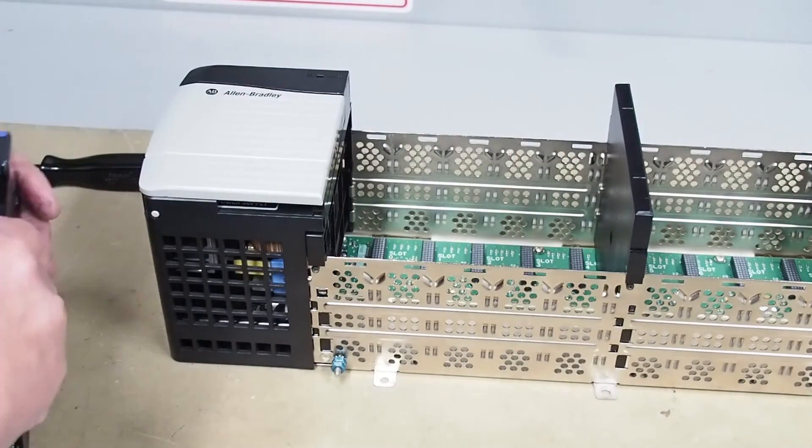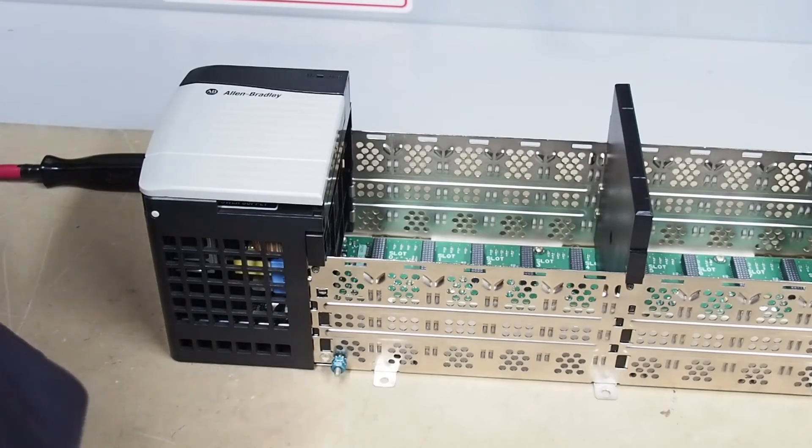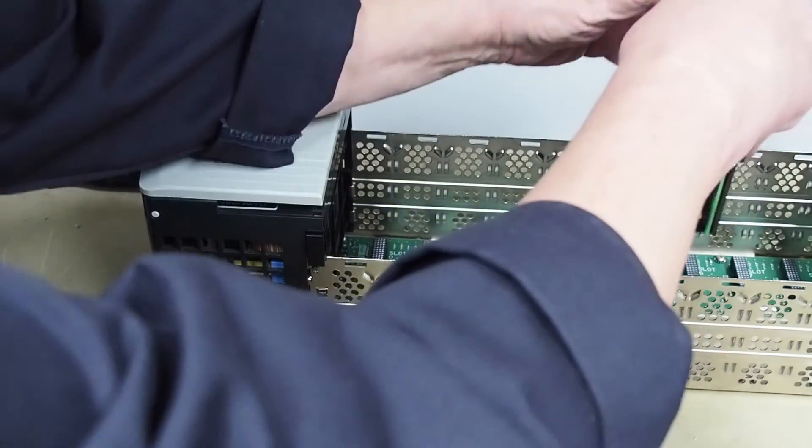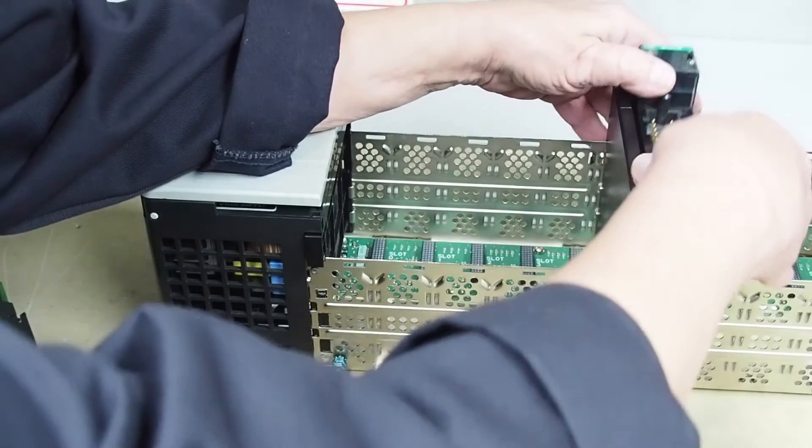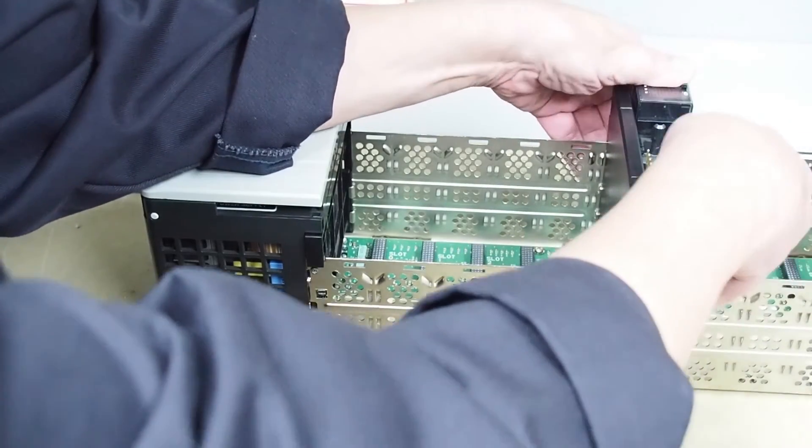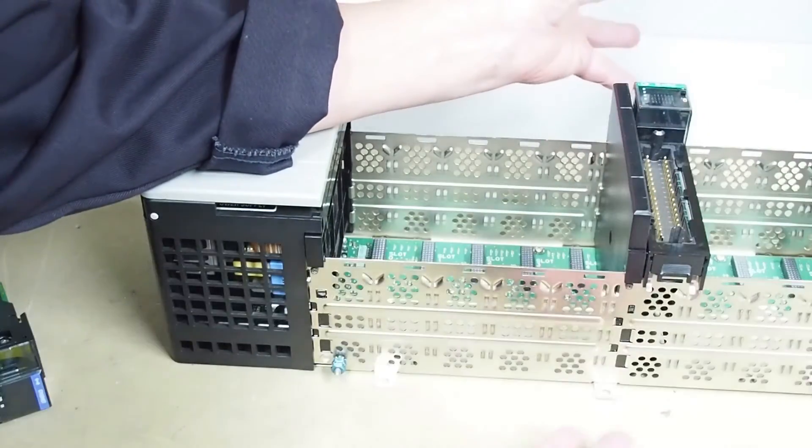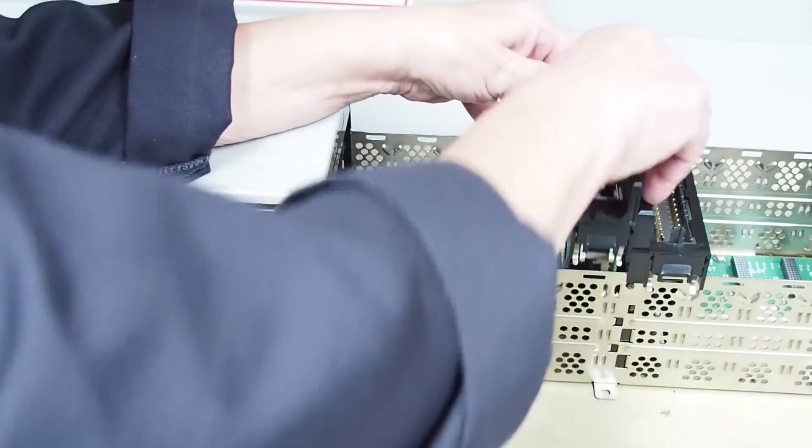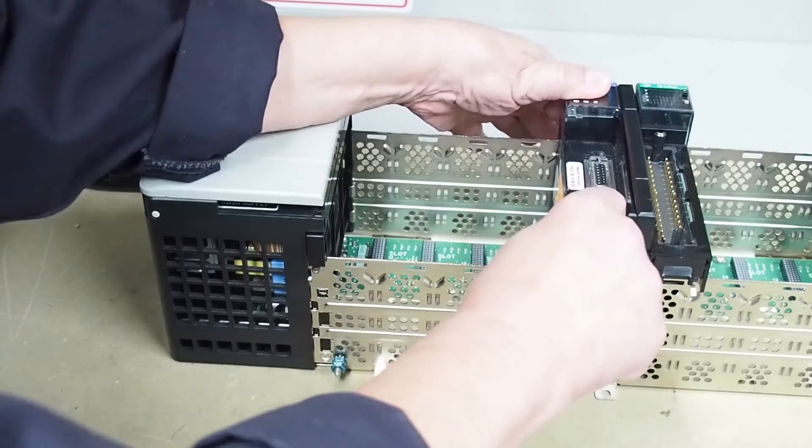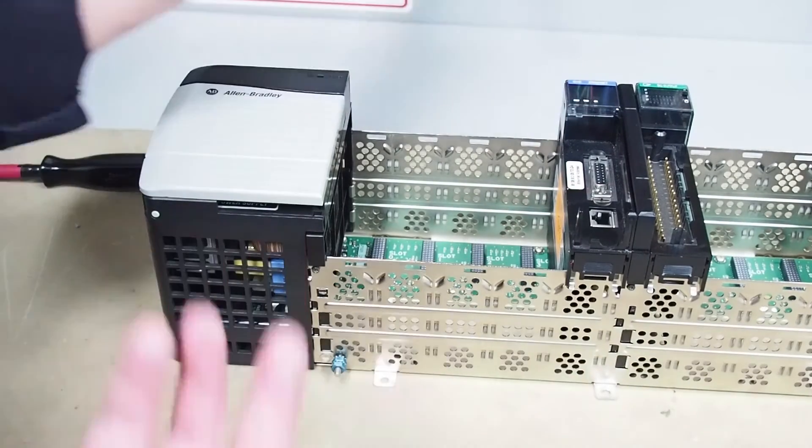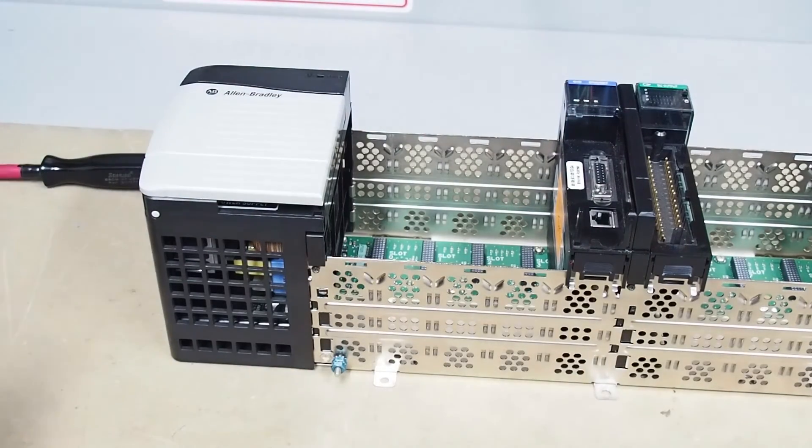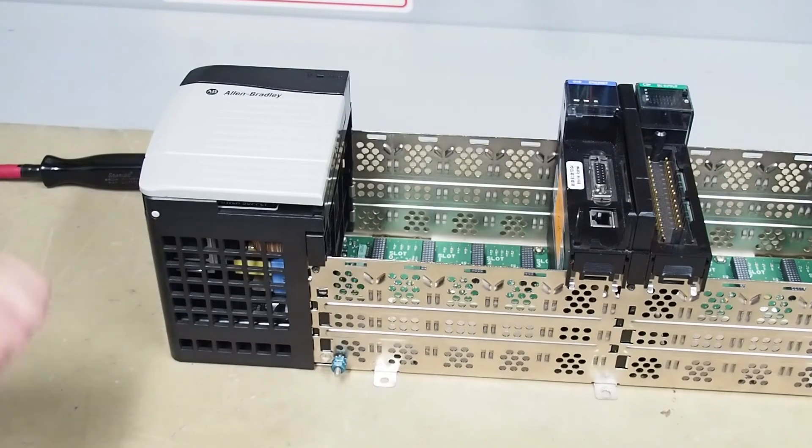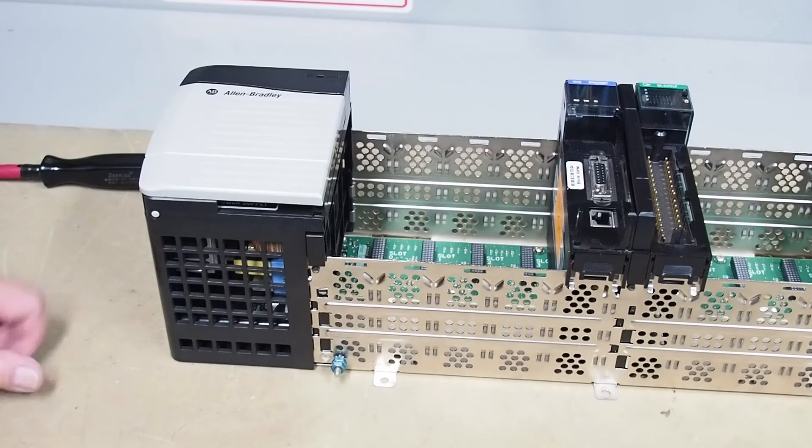So if you had more than one module it's exactly the same. So we'll go to this side of this one. This is just an old DC output module. Again it clicks in. This time it'll be quiet when I push it down. You hear it click. So there you go. That's how to assemble very basically a chassis with modules and a couple of modules and a power supply. So that's real simple.